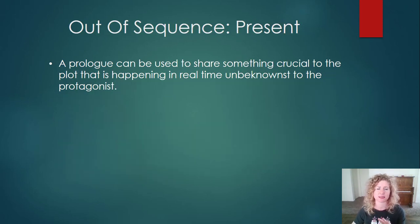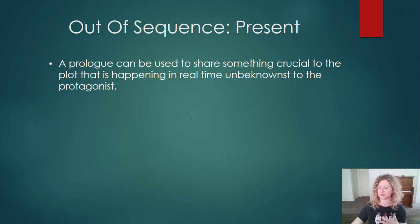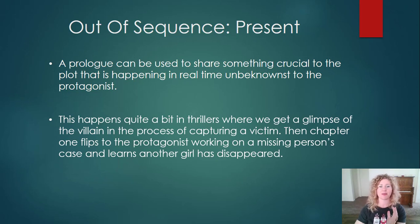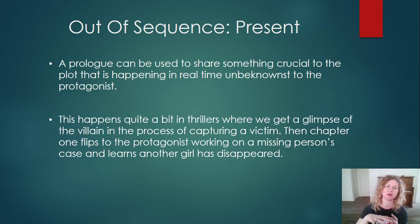Out of sequence present: a prologue can be used to share something crucial to the plot that is happening now in the present, unbeknownst to the protagonist. You're going to see this a lot in thrillers, where the prologue will actually show a conflict or a problem happening right then in the present. And then in chapter one, we get the reaction of this direct event happening with the protagonist. A lot of times this prologue is there simply because it's from the point of view of the villain.